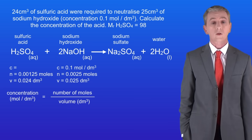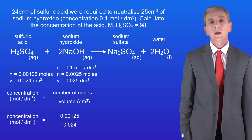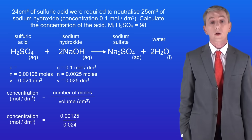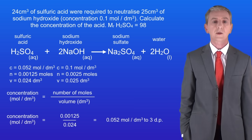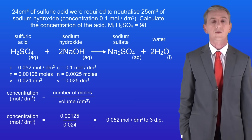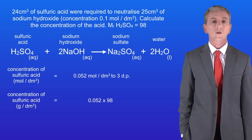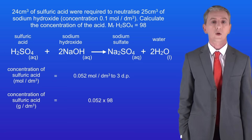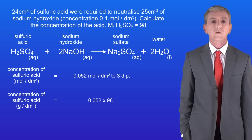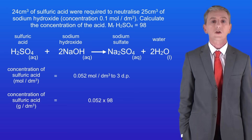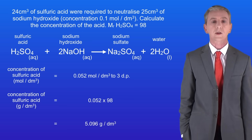Now we can calculate the concentration of the sulphuric acid by dividing the number of moles by the volume. 0.00125 divided by 0.024 gives us a concentration of 0.052 moles per decimetre cubed to three decimal places. To calculate the concentration in grams per decimetre cubed we multiply by the relative formula mass. The relative formula mass of sulphuric acid is 98. Multiplying 0.052 by 98 gives us a concentration of 5.096 grams per decimetre cubed.